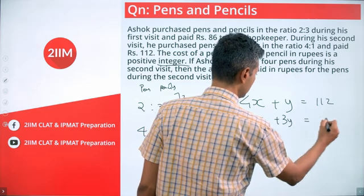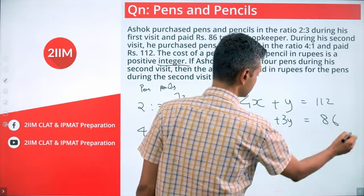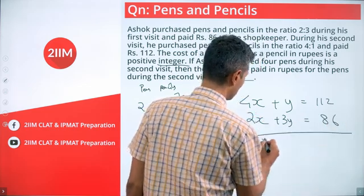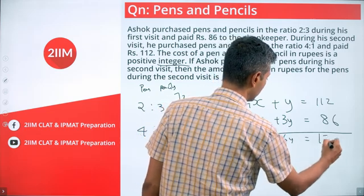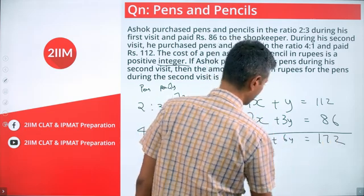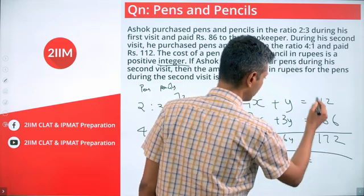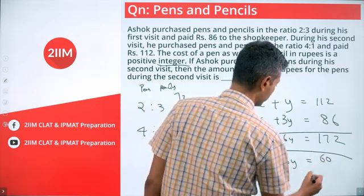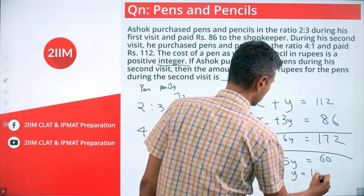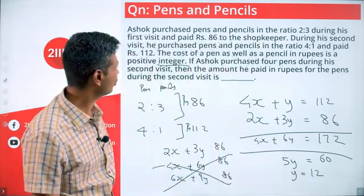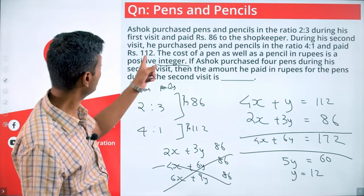Multiply this by 2: 4x+6y is 172. Subtract one from the other: 5 times y is 172 minus 112, which is 60, or y is 12. Cost of pencil is 12.